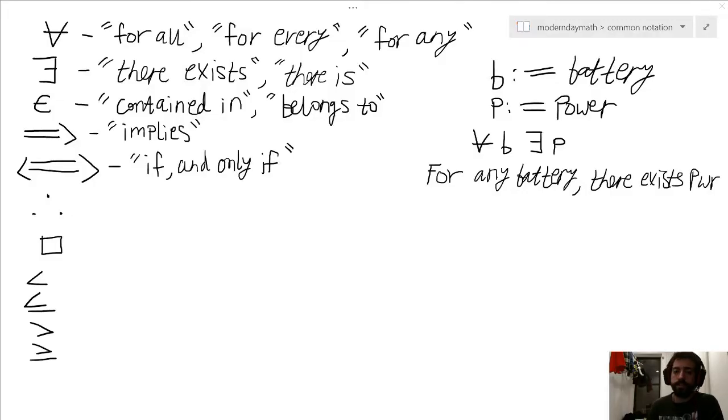Alright, so the next few symbols we're going to discuss are: Contained in or belongs to, Implies, and If and only if. We have contained in or belongs to, right, both ways to refer to the same symbol represented by an epsilon. And then where we have implies and if and only if, I just call this the implies symbol and the if and only if symbol. In propositional logic you'll have this implies symbol represented with an arrow, and you'll have this if and only if symbol represented with a double arrow.